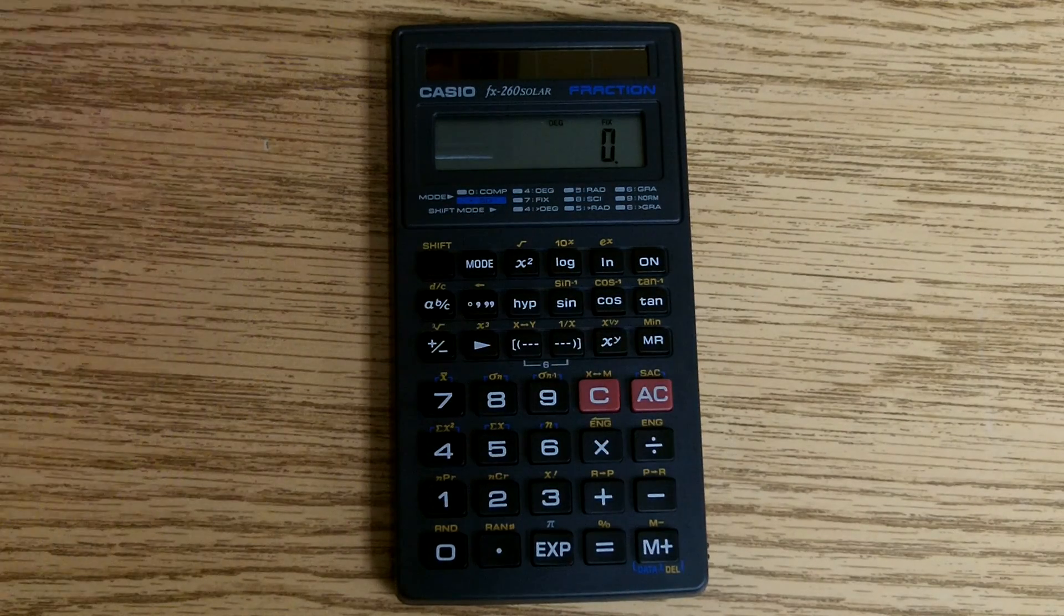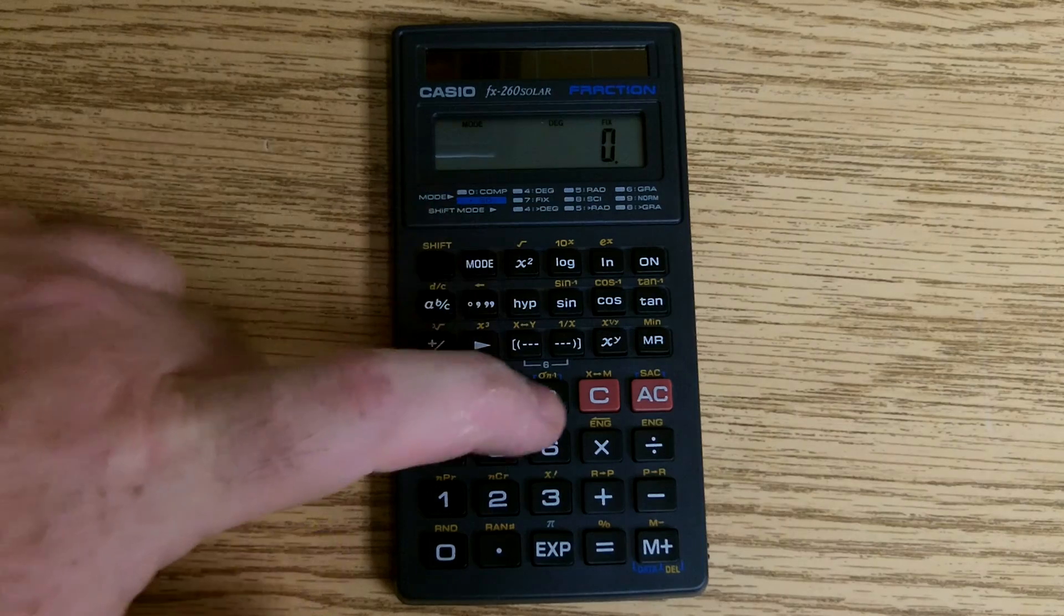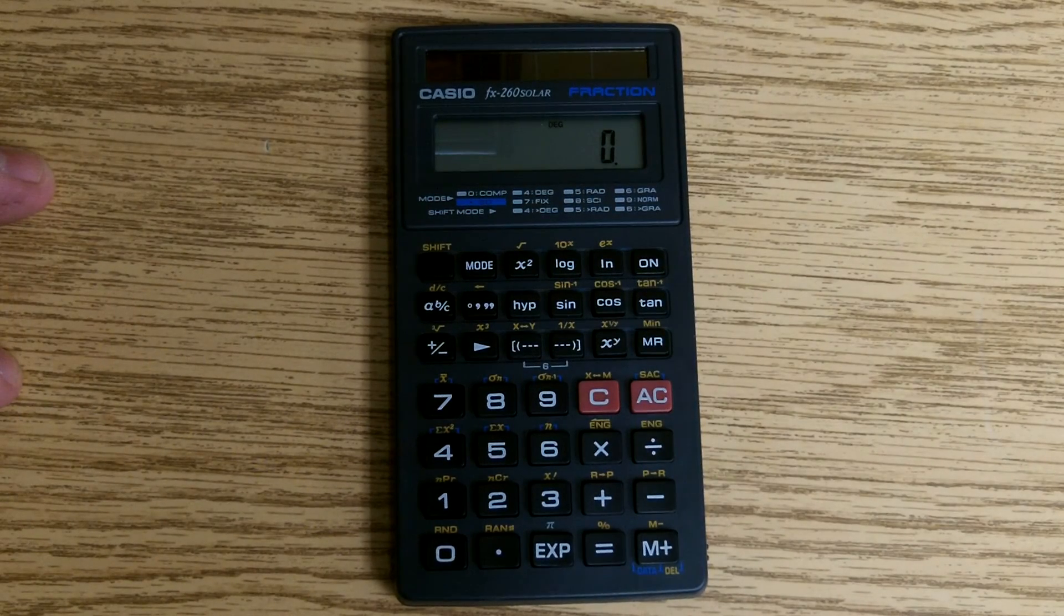You can select as many decimal places as you need, and you can also turn them back off by the mode 9, which is the normal mode.